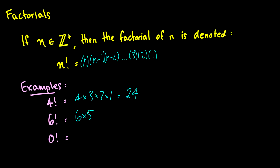6 factorial is 6 times 5 times — interestingly, we can just write 4 factorial. Since 4 factorial implies 4 times 3 times 2 times 1, why write it all out? We can say 6 times 5 times 4 factorial. We already know 4 factorial is equal to 24, so this is going to be 6 times 5 times 24, which is 120, and 6 times 120 is 720.